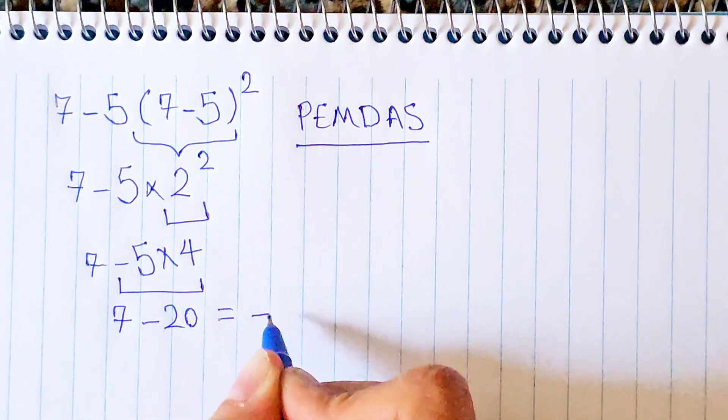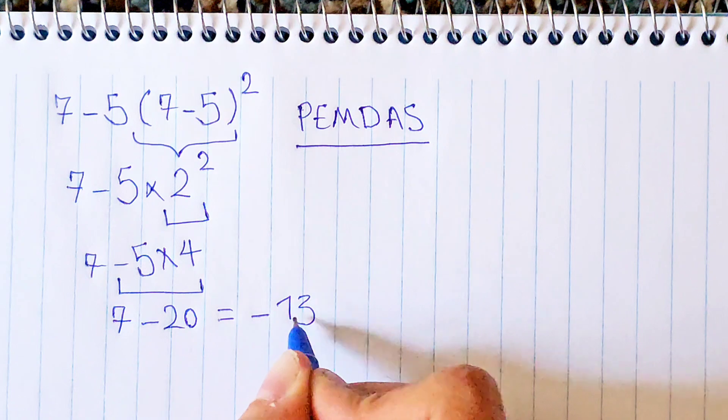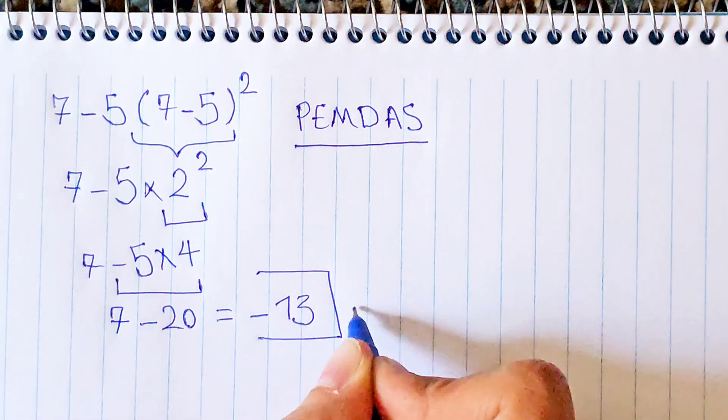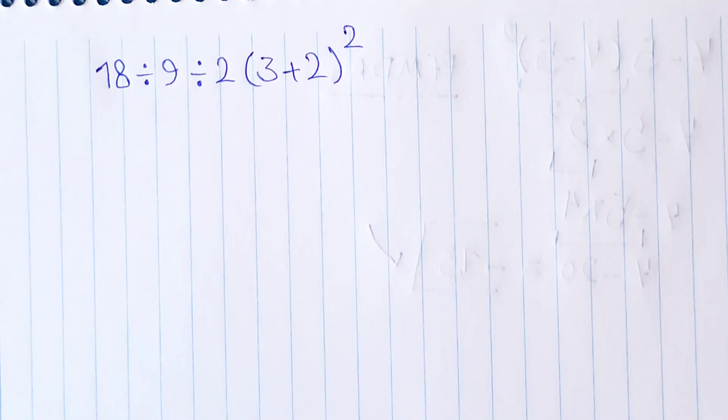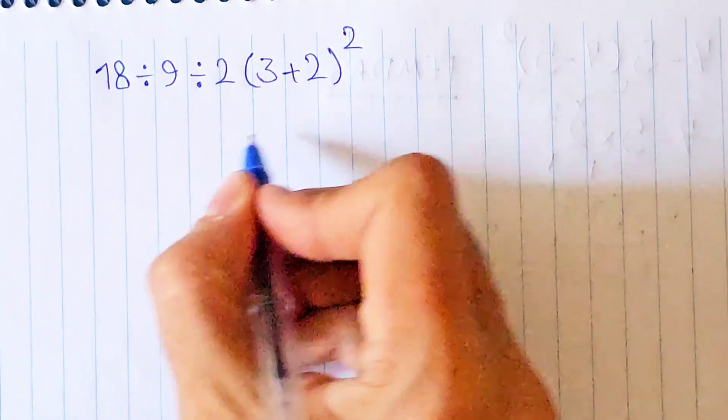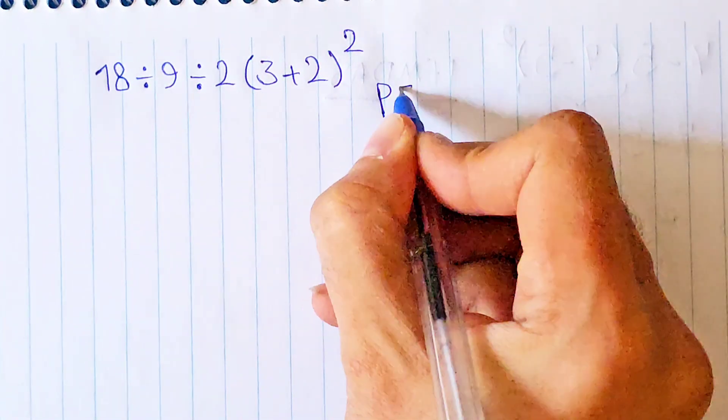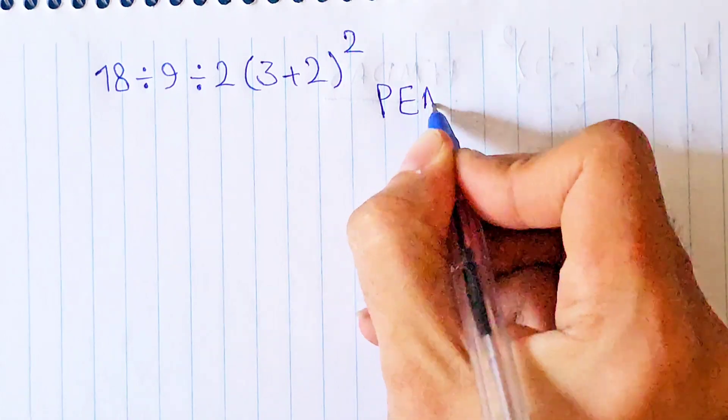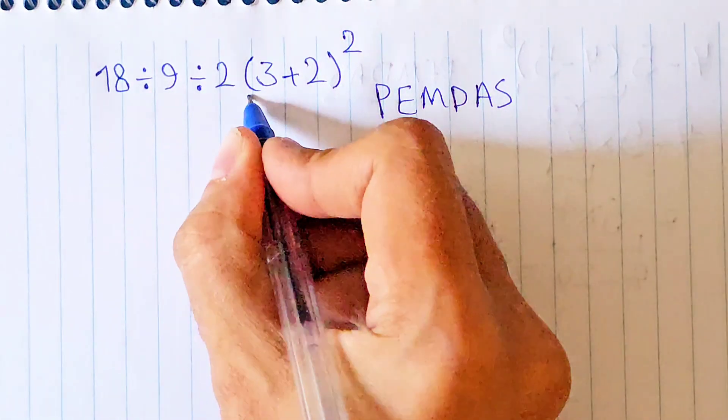Okay guys, let's solve another question about this rule: 18 divided by 9 divided by 2 times 3 plus 2 to the power of 2. According to the order of operations called PEMDAS, first we simplify the parentheses.